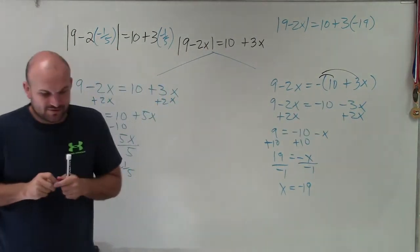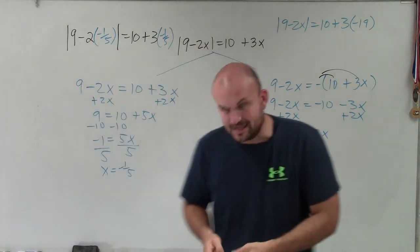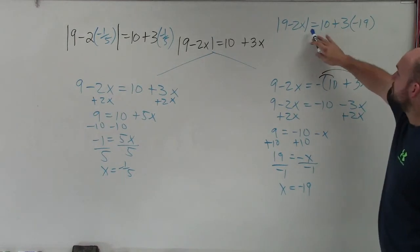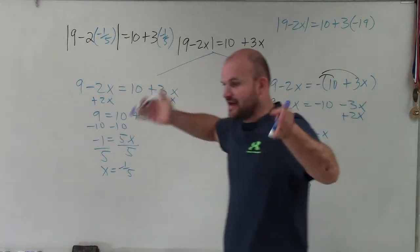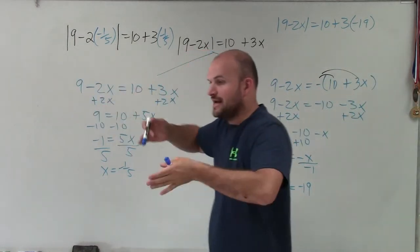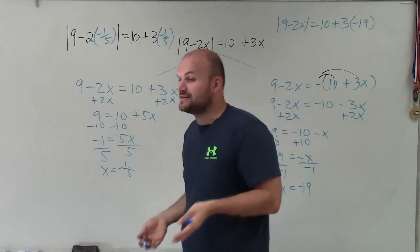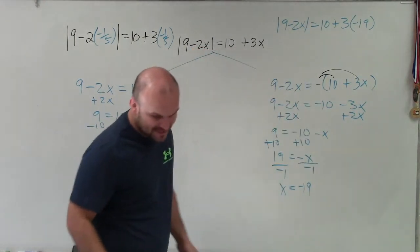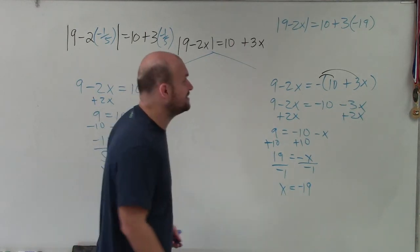Now if I had to simplify this, right? Because remember, an absolute value always has to equal a positive value. So when you take the absolute value, absolute value of a number is always going to be positive. Doesn't matter if you're taking the absolute value of a negative or a positive number, it's always going to be positive.